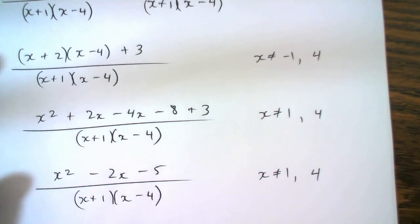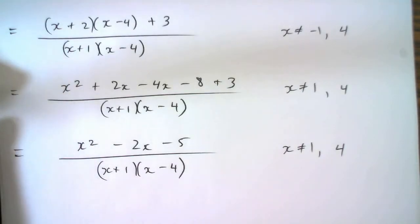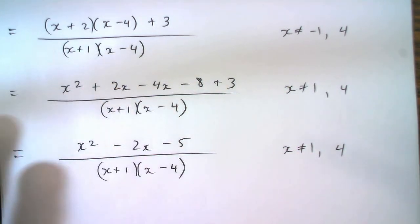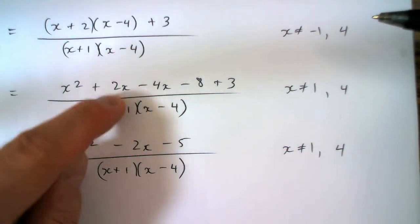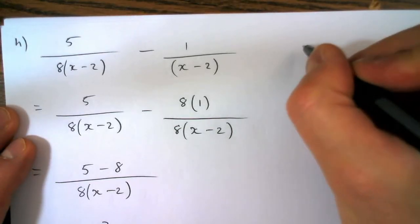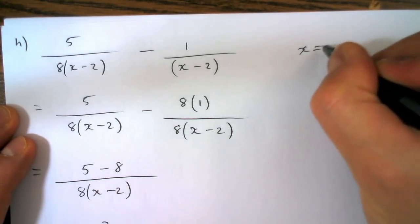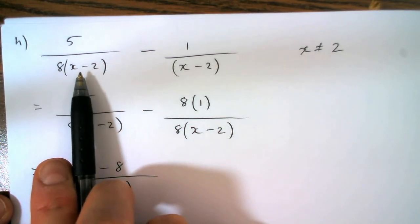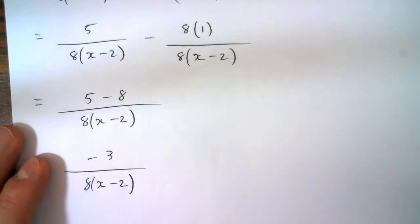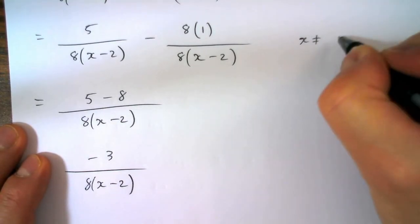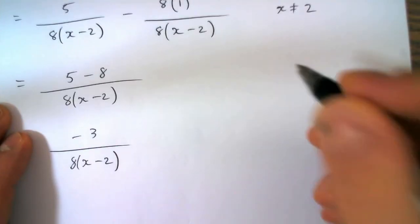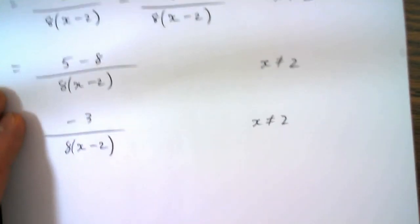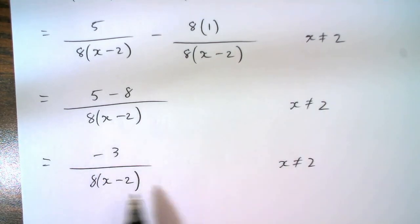We see that that continues and we don't see any other restrictions arise. As long as we keep x from being negative one and four, we're okay. In this example x cannot be two, because that would make this denominator zero and this denominator zero. We keep checking and we don't see any other restrictions that we need to add — as long as we don't allow x to be two, we're okay.